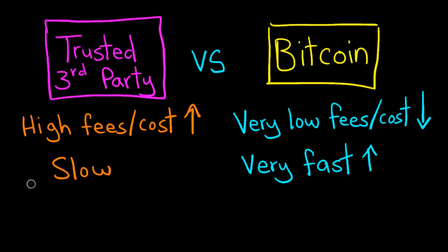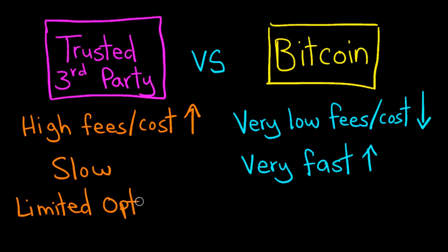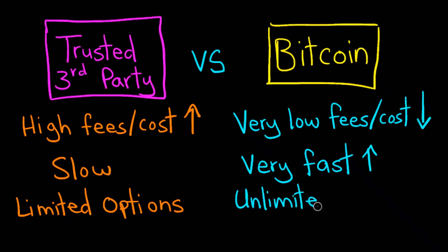Since we are on the topic of wire transfers, it's also worth noting that we have limited options in this regard. You're not going to wire transfer $20 and pay $10 in fees, and on top of that wait three to five business days — that wouldn't make much sense at all. This means that in the current system, we essentially have one option when it comes to conducting an international transaction: send a large amount. But in Bitcoin's system, you can send more or less money, instantly and almost free.